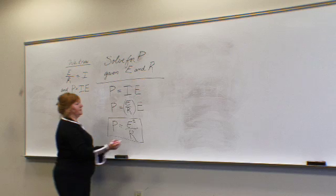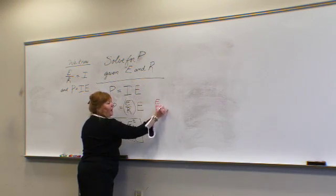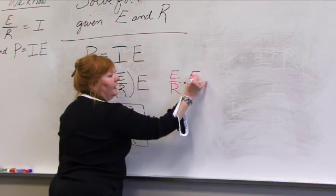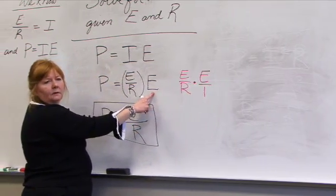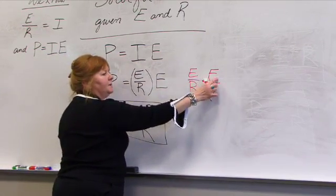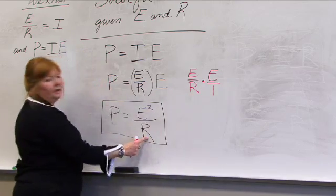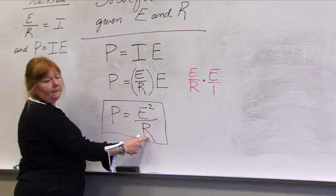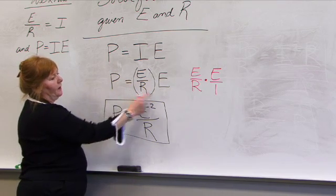Looking at this, I have E over R times E. And we can take anything and put it over 1, and it's just another way to write what we're referring to here. And if we do the math, E times E gives me E squared. R times 1 is what gives us the R here. So hopefully that helped you remember how to simplify fractions.